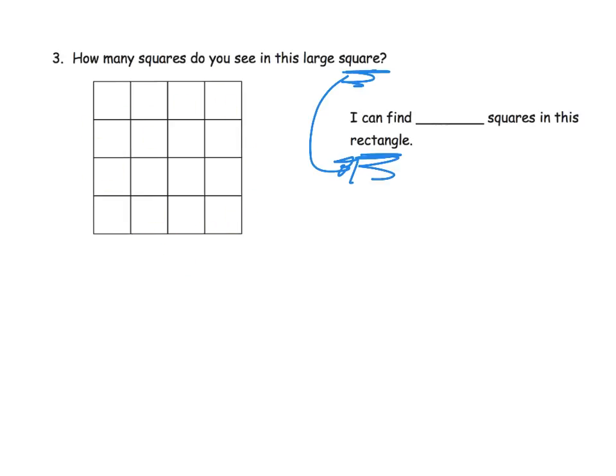So as we're counting our squares, 1, 2, 3, 4, 5, 6, 7, 8, 9, 10, 11, 12, 13, 14, 15, 16. We can say, well, there's 16 squares in this rectangle, or 16 squares in this large square.